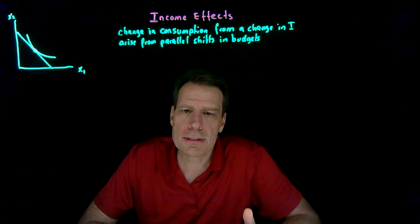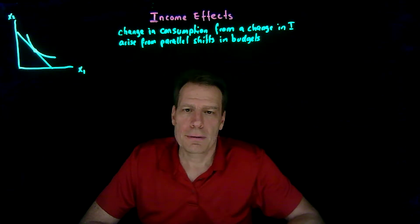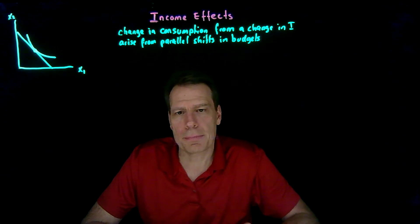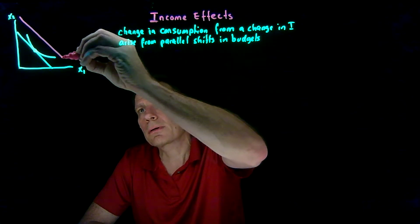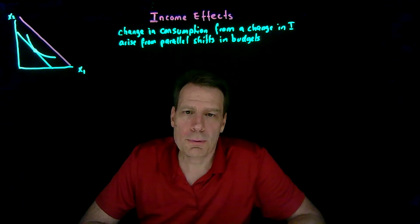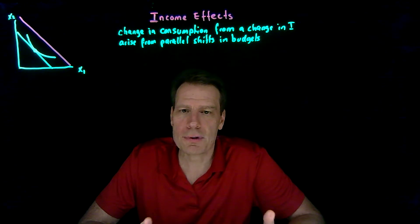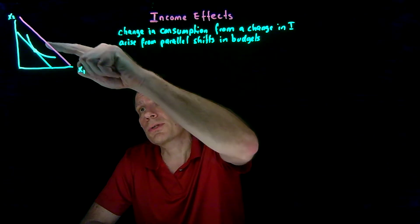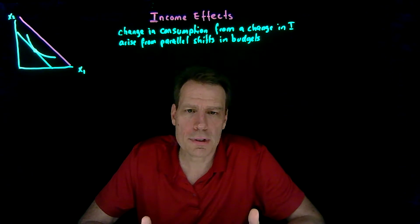We could ask, for instance, for this consumer who is optimizing at this bundle, what happens if she gets a raise — if her income goes up? If that income goes up, her budget constraint is going to shift out. We want to know what her new optimal consumption bundle is. And unless we know something more about her map of indifference curves, there's really no way to tell. All we can tell is that she's going to consume somewhere up here above this indifference curve, but we can't say anything more than that.